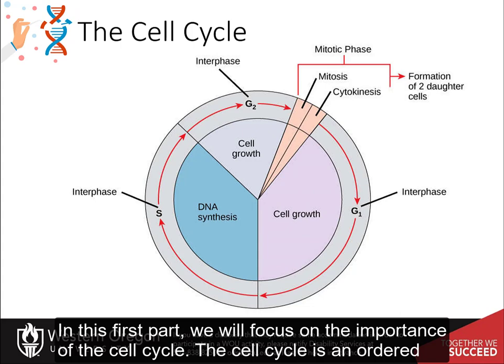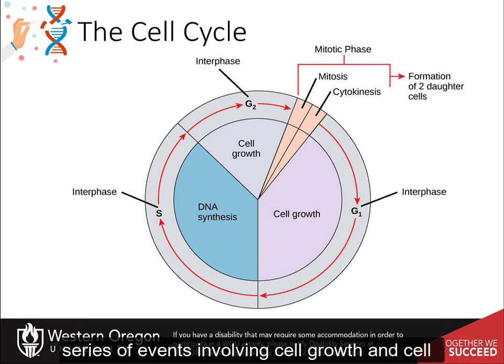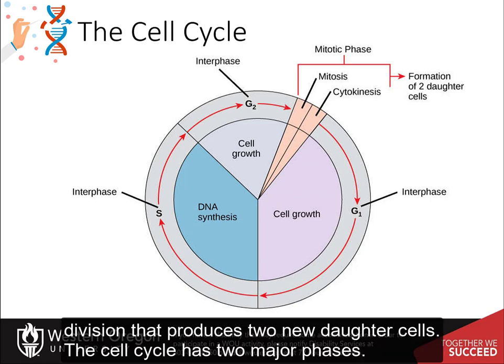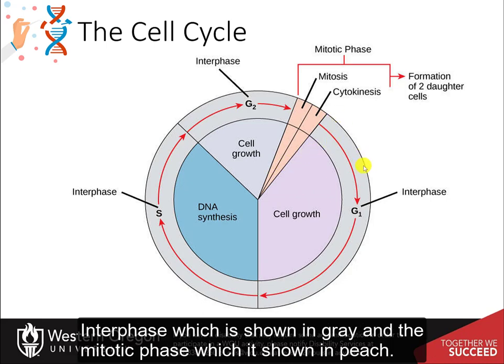The cell cycle is an ordered series of events involving cell growth and cell division that produces two new daughter cells. The cell cycle has two major phases: interphase, which is shown in gray, and the mitotic phase, which is shown in peach.